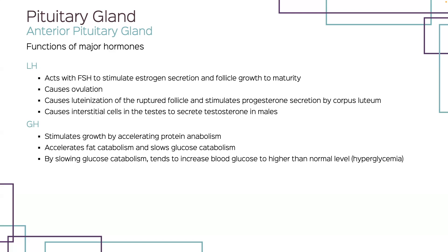Growth hormone, or GH, speeds up the movement of digested proteins from the blood and into the cells, which accelerates the cell's anabolism. This anabolic production promotes normal growth. Growth hormone also affects fat and carbohydrate metabolism — it accelerates fat metabolism but slows glucose metabolism, meaning less glucose enters the cells and the amount of glucose in the blood increases. Thus, GH and insulin have opposite effects on blood glucose.